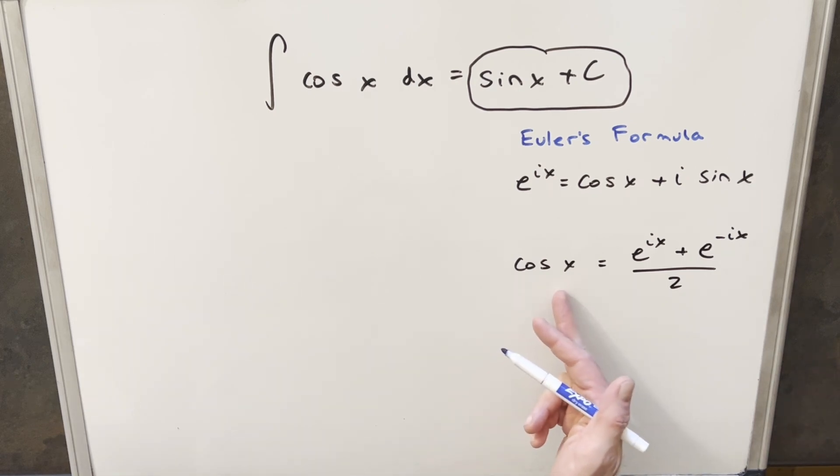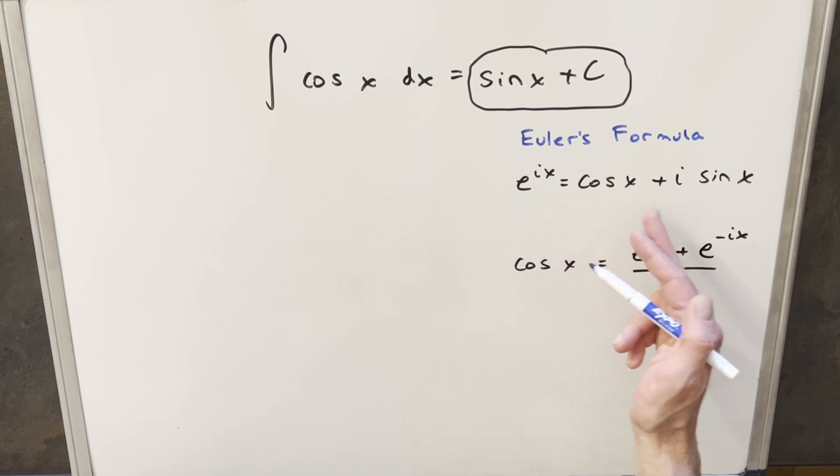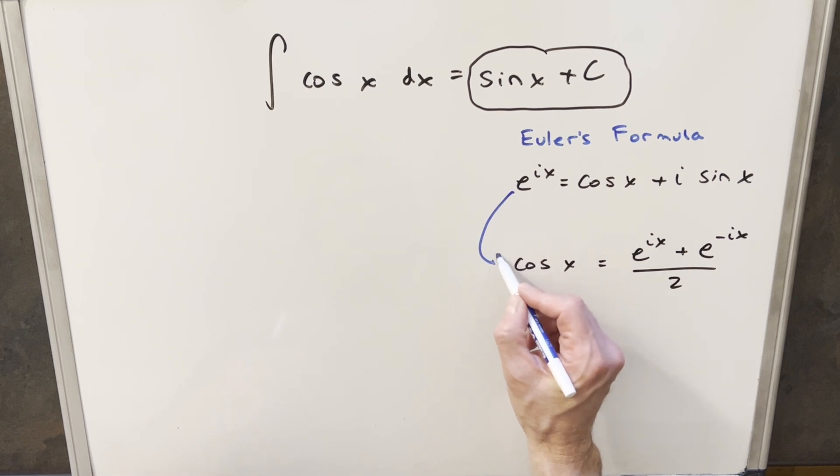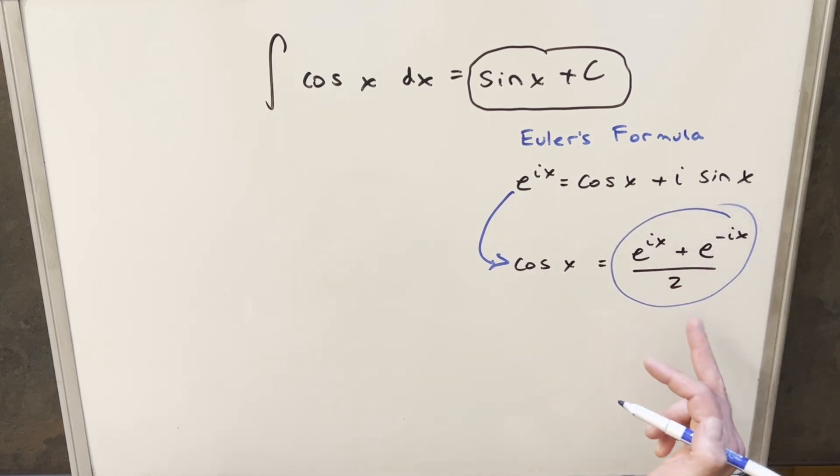So we have down here, well first we have Euler's formula over here to the right, which tells us that e^(ix) is going to be the same thing as cosine x plus i sine x. But from this it's really easy to derive a complex definition for cosine, which we have here. And because we're integrating cosine x, what I can do is just plug this into our integral and just integrate this. And so let's see how that goes.